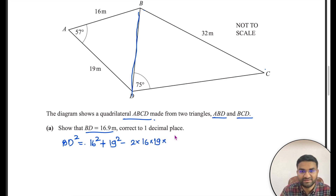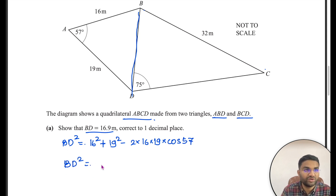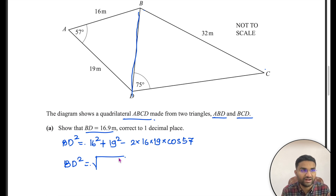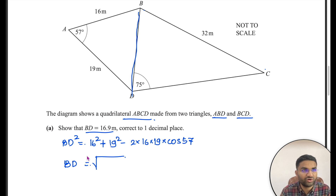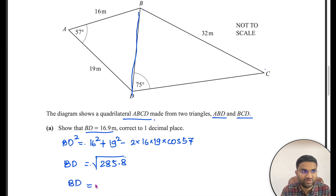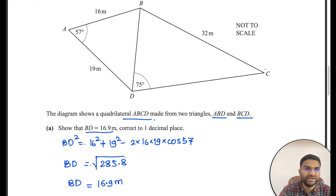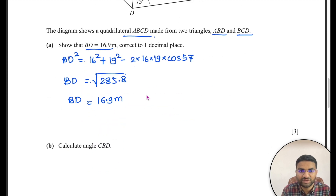Pause the video and calculate. You should get BD² = 285.8, so BD = √285.8 ≈ 16.9 metres. That's what we needed to show.